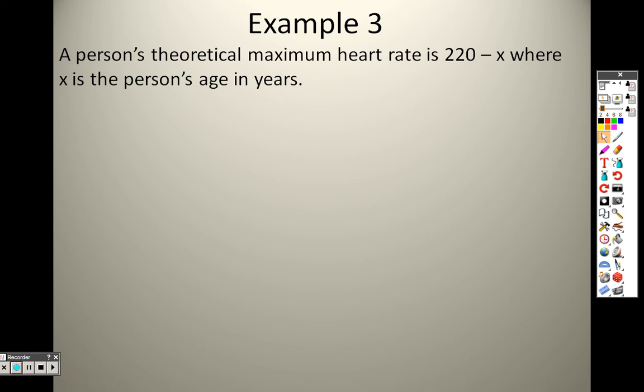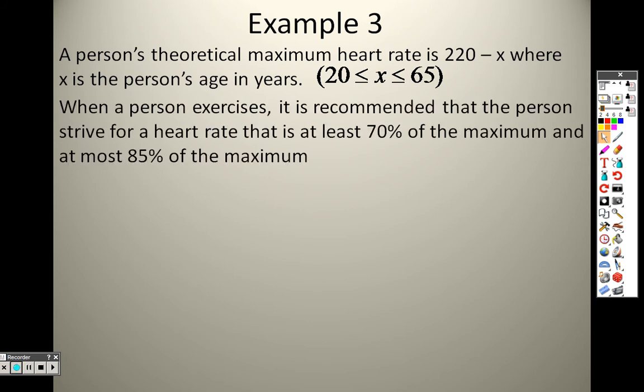Finishing up here, 3.3 on graphing systems of linear inequalities. We have a word problem that says a person's theoretical maximum heart rate is 220 minus x, where x is the person's age in years. This is only supposed to go between 20 and 65. When a person exercises, it's recommended that the person strive for a heart rate that is at least 70% of the maximum and at most 85% of the maximum.